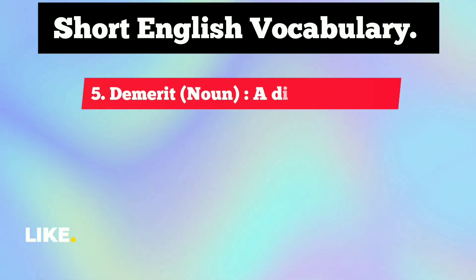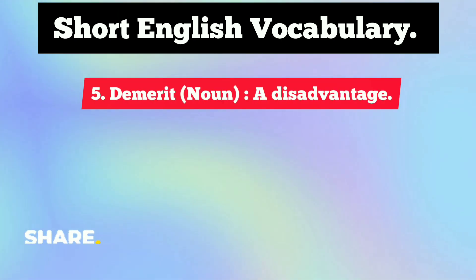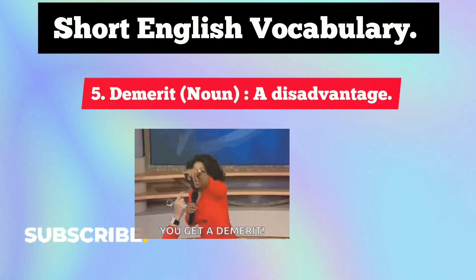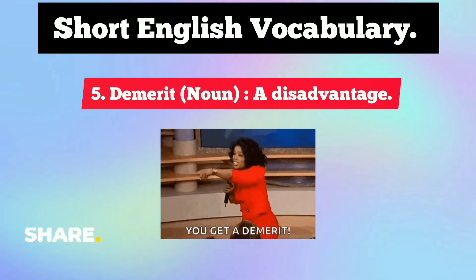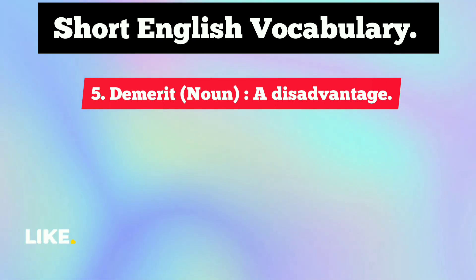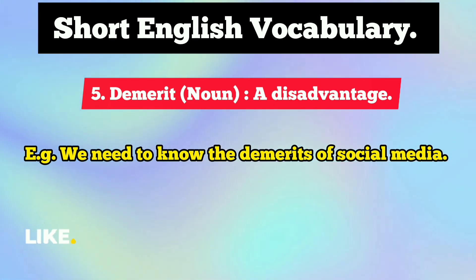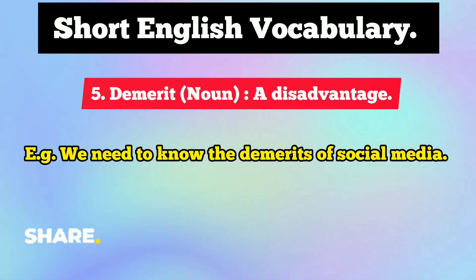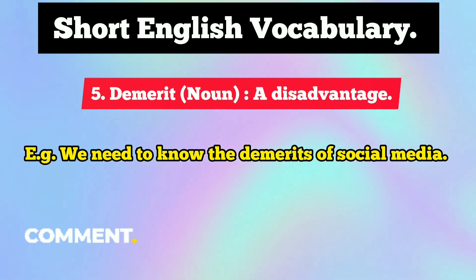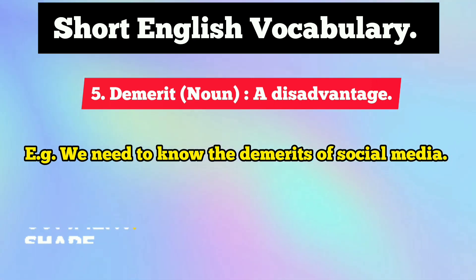The opposite word is 'demerit,' which is also a noun and means a disadvantage. For example: 'We need to know the demerits of social media.' Obviously it has some demerits also, and you must know them and use social media wisely.